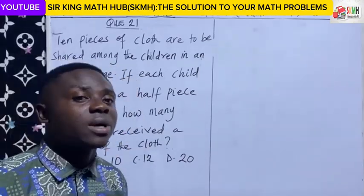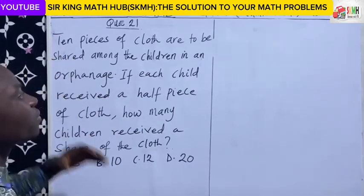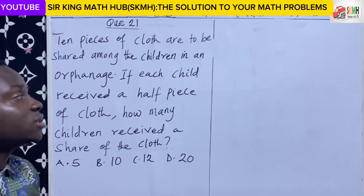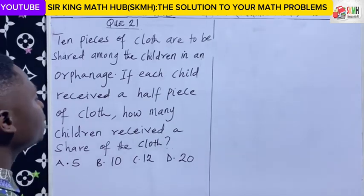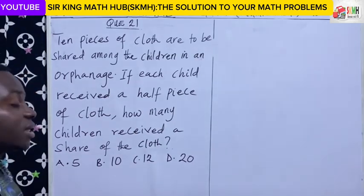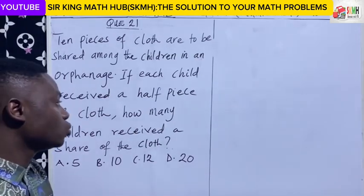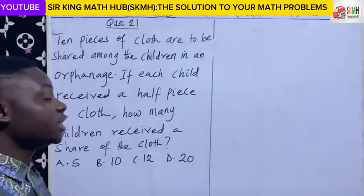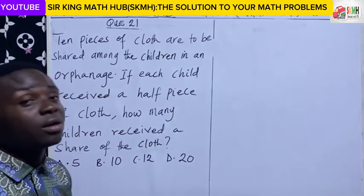Objective question number 21. 10 pieces of cloth are to be shared among some children in an orphanage. If each child received a half piece of cloth, how many children received a share of the cloth? We are required to find the number of children in the orphanage who received a share of the cloth.